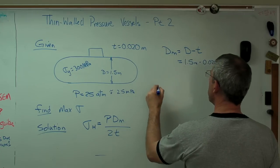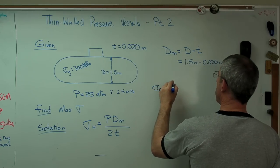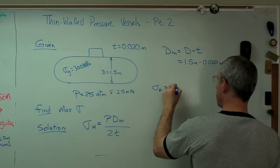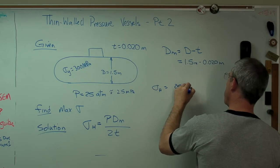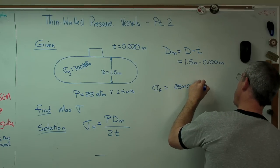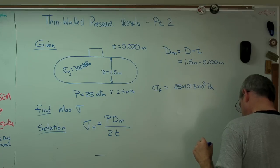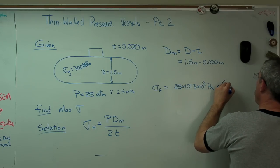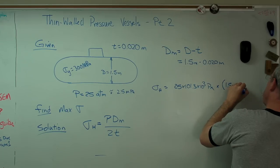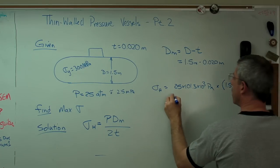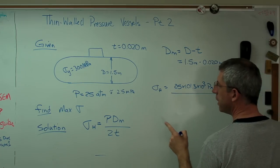All right. So if we work through this, it's pressure. So it's 25 times 101.3 times 10 to the 3 pascals times 1.5 minus 0.020 meters. All over, let's see, 2 times 0.020 meters.